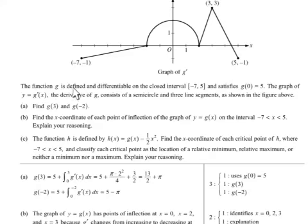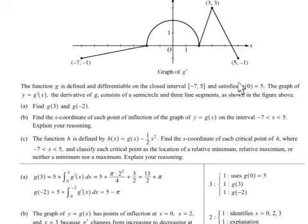For the function, g is defined and differentiable on the closed interval from negative 7 to 5, and satisfies that at 0, the function g is 5. Y is the derivative of g — it's a semicircle right here and three segments.